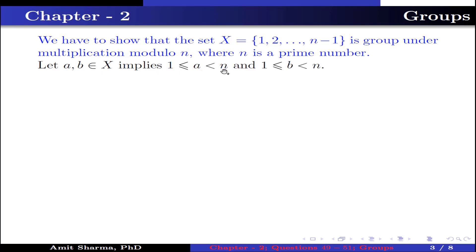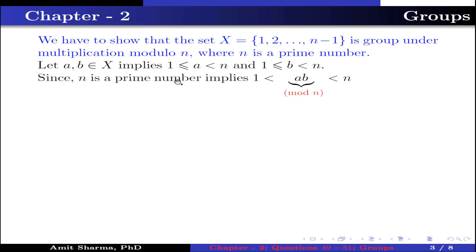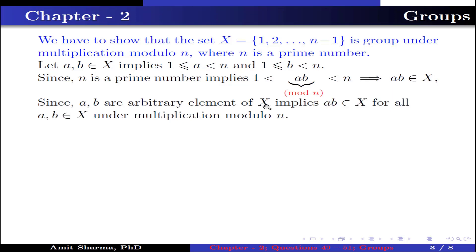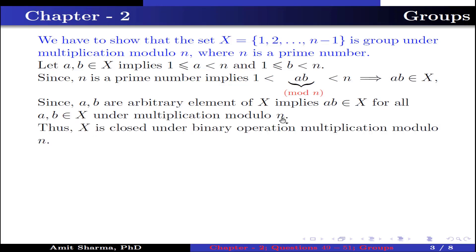This implies 1 ≤ a < n and 1 ≤ b < n. Since n is a prime number, this implies 1 < ab < n, where ab is under multiplication modulo n. This implies ab belongs to X. Since a and b are arbitrary elements of X, this implies ab belongs to X for all a, b in X under multiplication modulo n. Thus X is closed under the binary operation of multiplication modulo n.